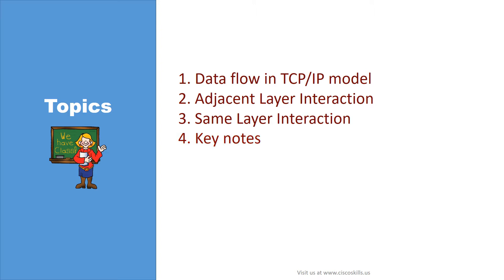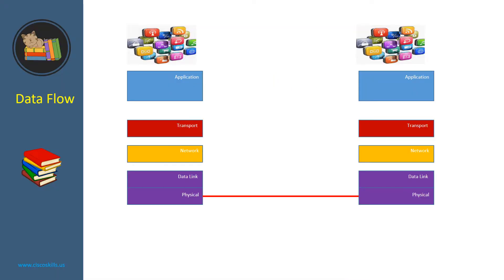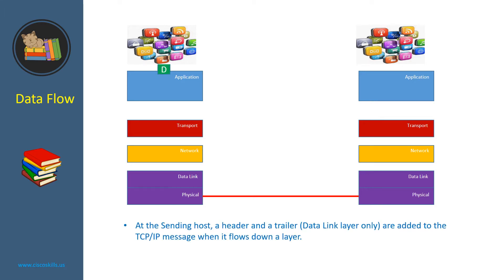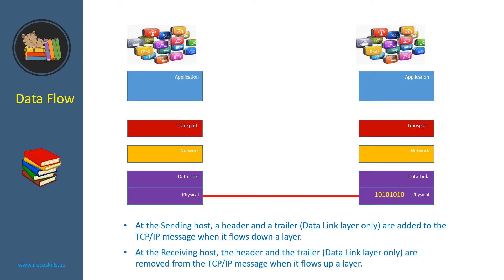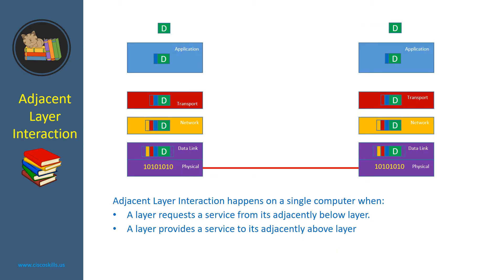As you know, as soon as an application software requests to send data, the data starts to flow in the TCP/IP model. At the sending host, a header and a trailer are added to the TCP/IP message when it flows down a layer. When it gets to the physical layer, the message gets sent to the receiving host. At the receiving host, the header and trailer are removed from the TCP/IP message when it flows up a layer, and finally it gets delivered to the application software of the receiving host.